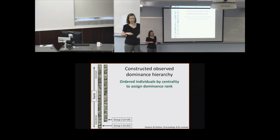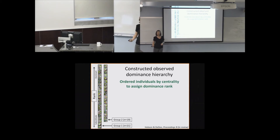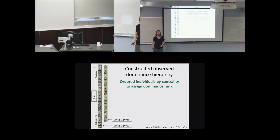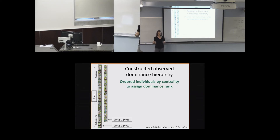From that we constructed the observed dominance hierarchy, ordering individuals by centrality to assign dominance rank. The most dominant individuals are at the top—those with the lowest centrality values, who are the originators of aggression—and the highest centrality individuals at the bottom are the recipients of most aggression. Eigenvector centrality is nice because it considers both direct and indirect interactions in the aggression network. It's actually a very similar algorithm to what Google uses to determine which web pages pop up in your search browser.